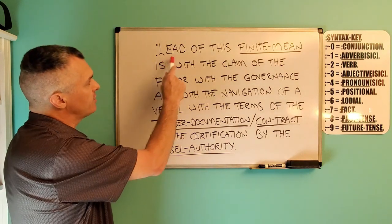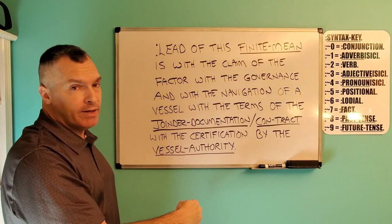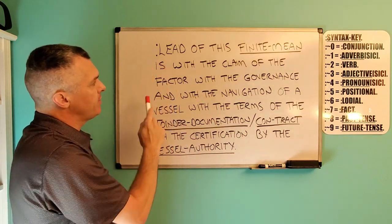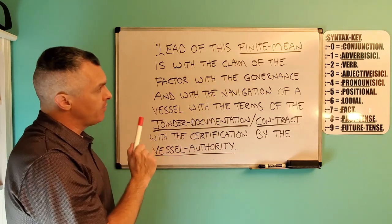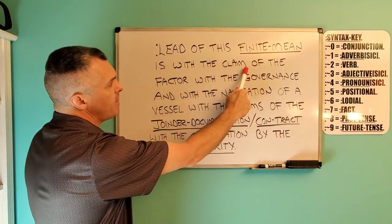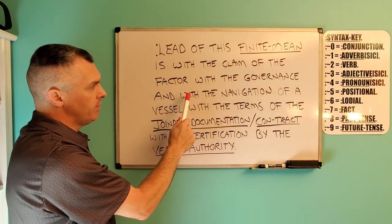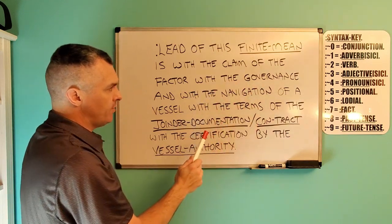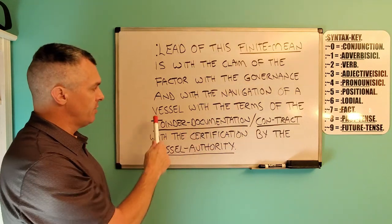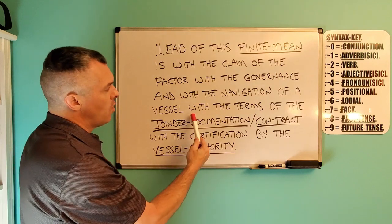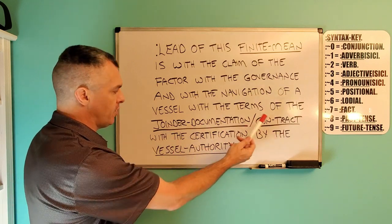So going forward, we have our cause, which is 'lead.' And what is lead concerned with? This finite mean. Now we put our verb of thinking in, because we have our two points with which to draw our straight, correct line. We put our thinking in, now we can continue on with the rest of the claim — possessive. What is the claim concerned with? The factor. Possessive of what? The governance and navigation. And what are the governance and navigation concerned with? A vessel. Possessive with the terms — the joinder documentation and contract.